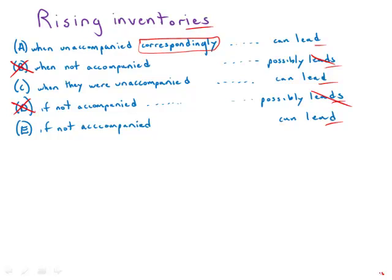And now this funny word 'correspondingly' - a very awkward word. 'Accompanied correspondingly' - the corresponding that we want to have happen here is that the rising inventories may or may not correspond to the increase in sales. We're trying to pair up two nouns in their corresponding, so we need an adjective, not an adverb modifying the verb 'unaccompanied.' 'Unaccompanied correspondingly' is very strange and very awkward, so